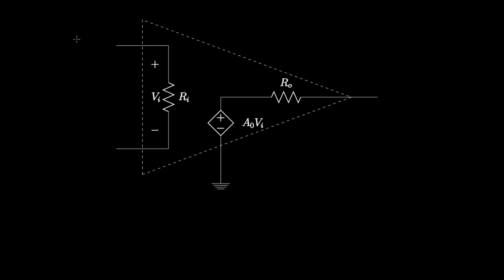If we label the voltages that appear at the positive input, at the negative input, and at the output, then each of these voltages refers to a voltage relative to ground. So V plus is the voltage at the positive input terminal relative to ground, V minus is relative to ground, Vi is V plus minus V minus, and the output voltage is also implicitly referenced to ground.